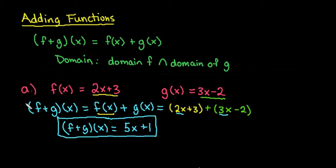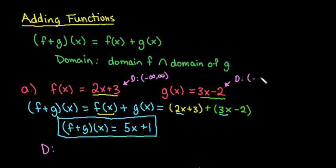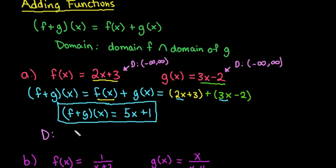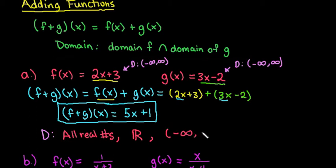For the domain, we look at f of x individually. Because it's just a linear equation, there are no restrictions, so the domain is negative infinity to positive infinity. Same thing for g of x — no restrictions, so its domain is also negative infinity to positive infinity. You can write this as all real numbers, using the ℝ symbol, or in interval notation as negative infinity to positive infinity.